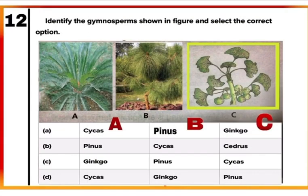Question 12: You have figures of gymnosperms. Identify A, B, and C. A is Cycas, B is Pinus, and C is Ginkgo. They are all gymnosperms with naked seeds. Stems are unbranched in Cycas and branched in Pinus. Ginkgo is a living fossil. Correct option is A. Mark A.